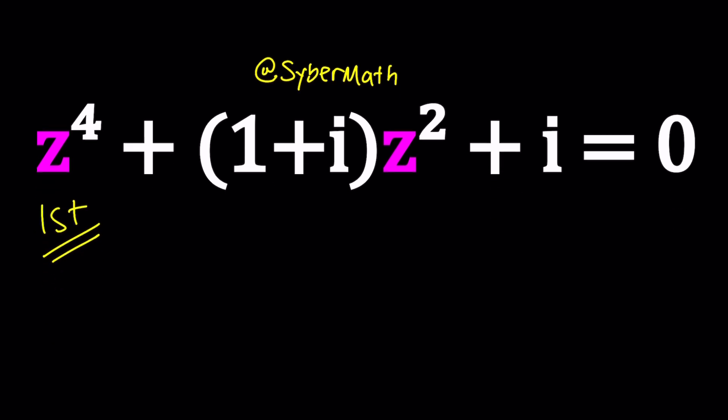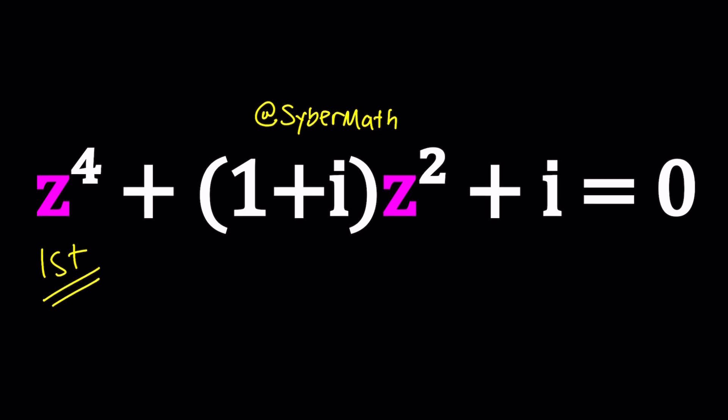So let's start with the first method. For my first method, I'm going to use substitution. Notice that we have z squared and z to the fourth in our equation, there is no z or z cubed, which is good because this is considered a bi-quadratic, which means we can turn this into a quadratic equation by way of substitution.